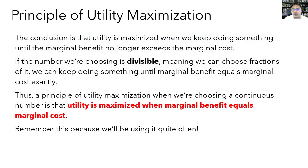The conclusion from thinking at the margins: to maximize utility, keep doing something until the marginal benefit of doing it one more time no longer exceeds the marginal cost. If the quantity being chosen is a real number — meaning you can choose fractions — you keep going until marginal benefit equals marginal cost exactly. Thus the principle of utility maximization is that utility is maximized when marginal benefit equals marginal cost. Remember this, because it comes up often in economic analysis.